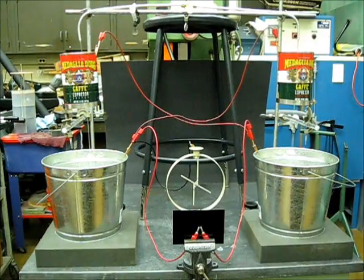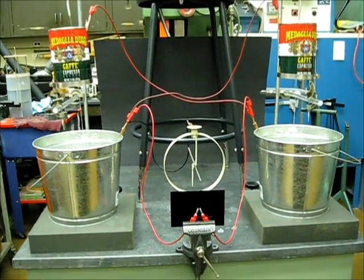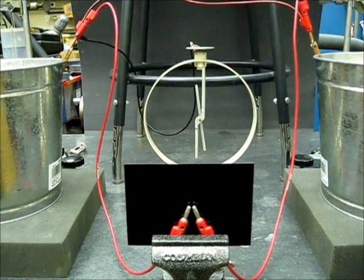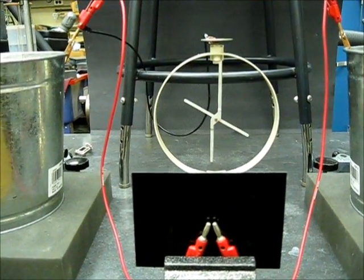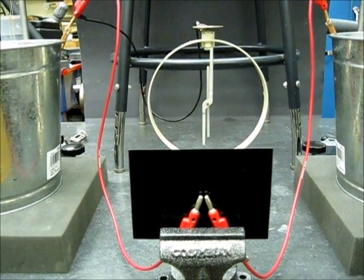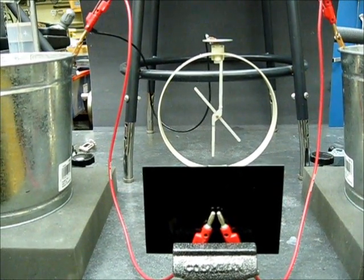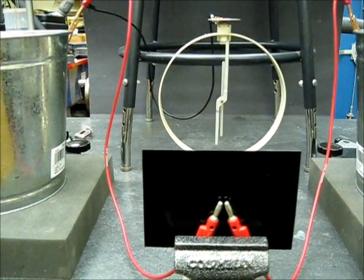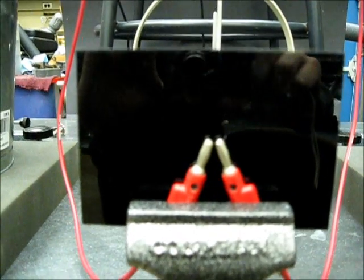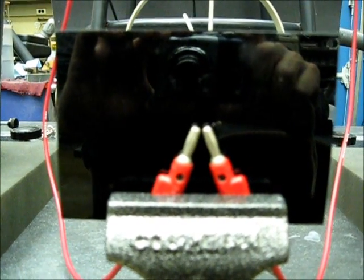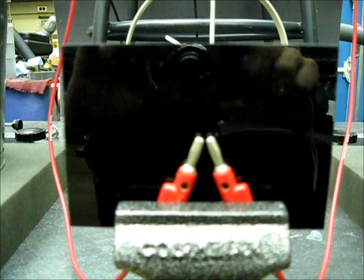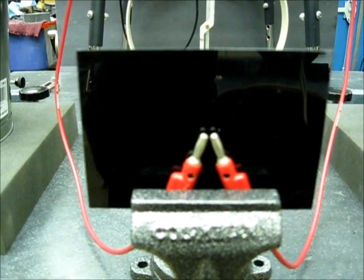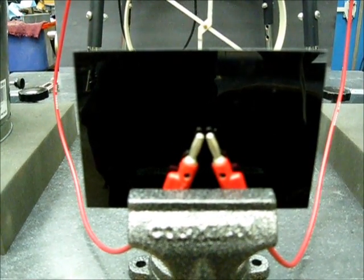Here we see the electroscope charging. And there must have been a spark. Let's zoom in and see if we can actually see the spark. Charging, spark. Charging, spark. Charging. Let's get really close so we can really see the spark. Charging, discharge spark. The device we built sparks every 10 to 15 seconds.